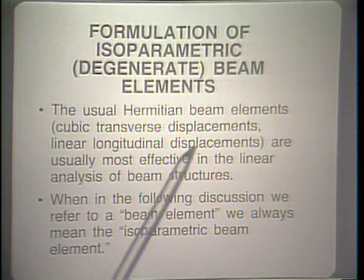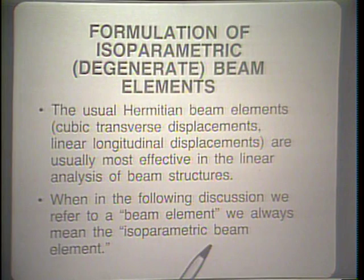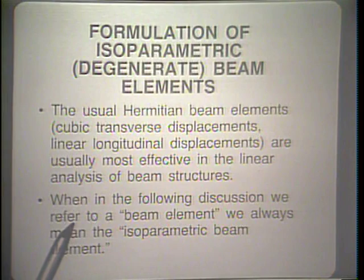When we talk about beam elements, we might think about the usual Hermitian beam elements in which the transverse displacements are cubically interpolated and the longitudinal displacements are linearly interpolated. This is an element usually used in linear analysis and very widely used. However, in my discussion now, I will talk about the isoparametric beam element and how we formulate it and apply it in the analysis of structures.